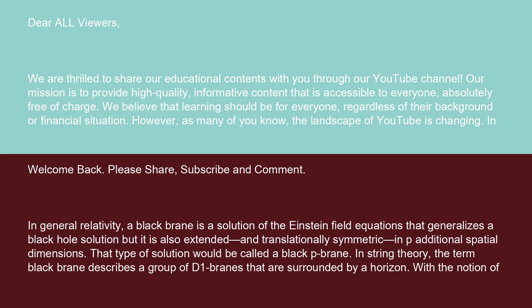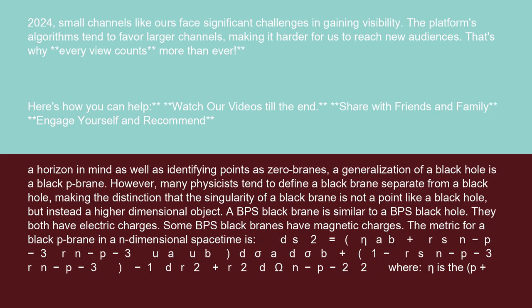In string theory, the term black brane describes a group of D-branes that are surrounded by a horizon. With the notion of a horizon in mind, as well as identifying points as zero-branes, a generalization of a black hole is a black p-brane. However, many physicists tend to define a black brane separate from a black hole, making the distinction that the singularity of a black brane is not a point like a black hole, but instead a higher dimensional object.